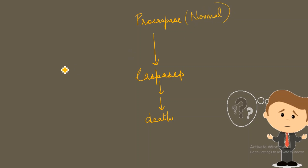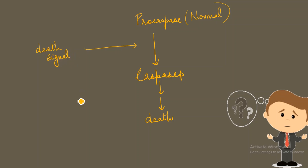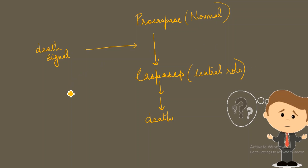On the arrival of a death signal, the procaspase will be converted into the caspase and it will cause the death of the cell. From this you can say that caspases have a central role in apoptosis, so now it becomes important for us to understand the caspases.